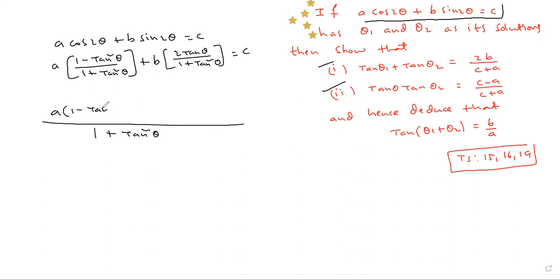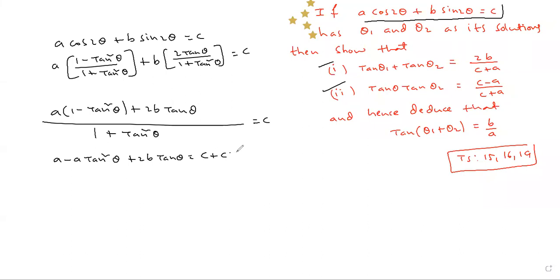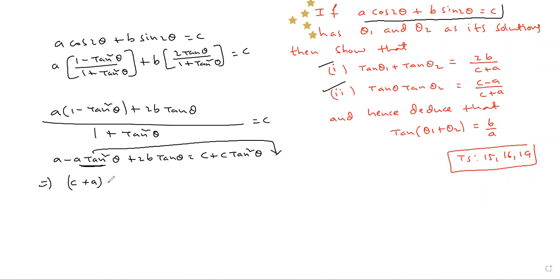After substitution, we get: a(1 − tan²θ) + 2b·tan θ = c. Expanding: a − a·tan²θ + 2b·tan θ = c. Moving all terms to one side — c·tan²θ minus a·tan²θ moves to the right side as plus a·tan²θ — giving us (c + a)·tan²θ.